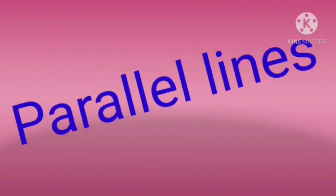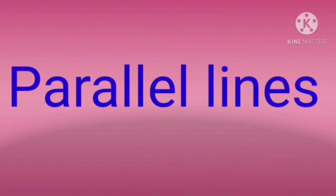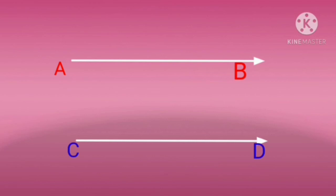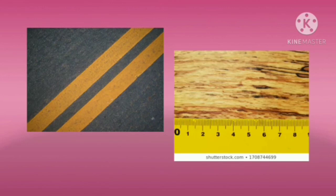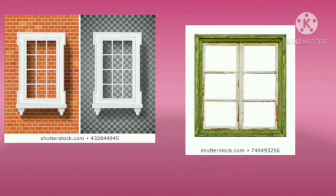Next, parallel lines. Two lines in a plane that do not meet ever are called parallel lines. The line AB and the line CD, if extended, never meet. Examples of parallel lines include railway lines, opposite edges of a ruler, and crossbars of windows, etc.